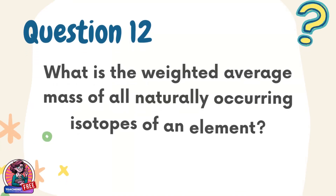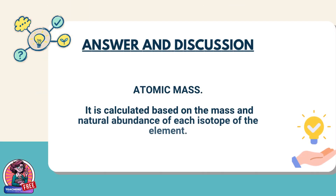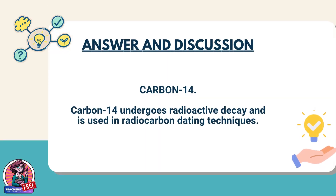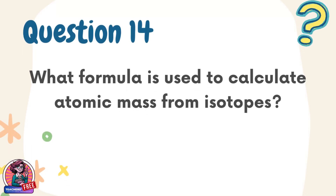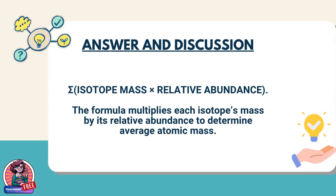Question 12. What is the weighted average mass of all naturally occurring isotopes of an element? Answer: Atomic mass. It is calculated based on the mass and natural abundance of each isotope of the element. Question 13. What isotope of carbon is commonly used to date fossils and ancient artifacts? Answer: Carbon-14. Carbon-14 undergoes radioactive decay and is used in radiocarbon dating techniques. Question 14. What formula is used to calculate atomic mass from isotopes? Answer: Sigma (isotope mass times relative abundance). The formula multiplies each isotope's mass by its relative abundance to determine average atomic mass.